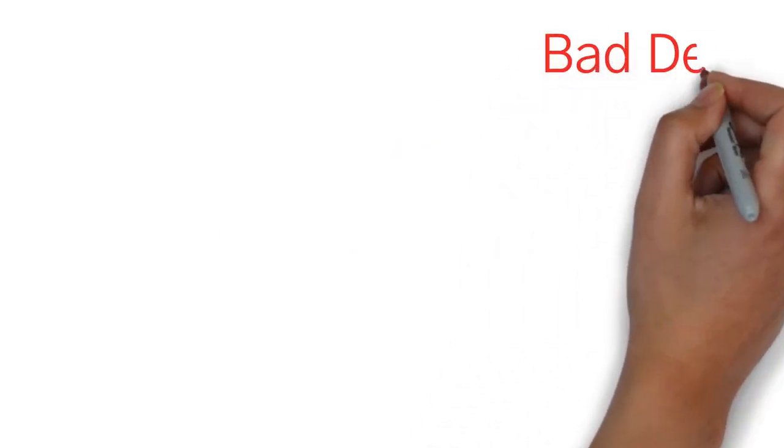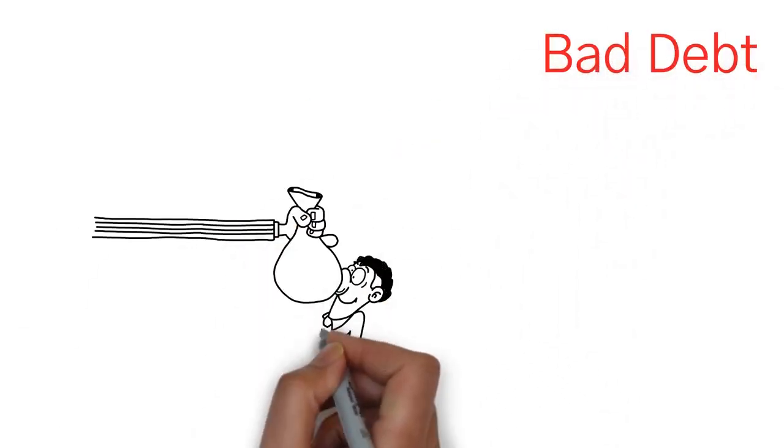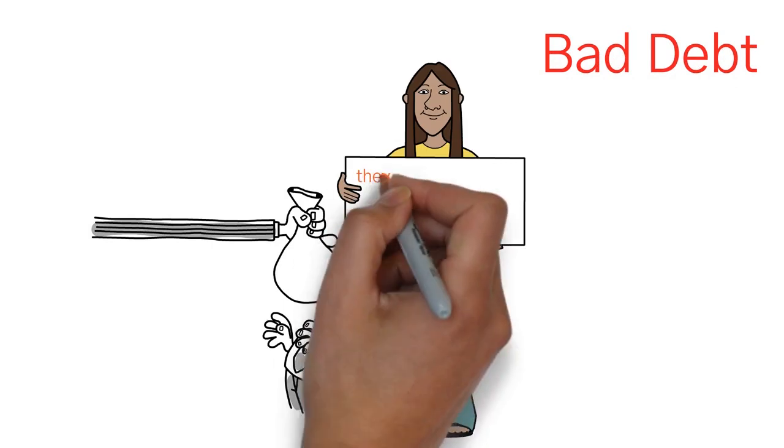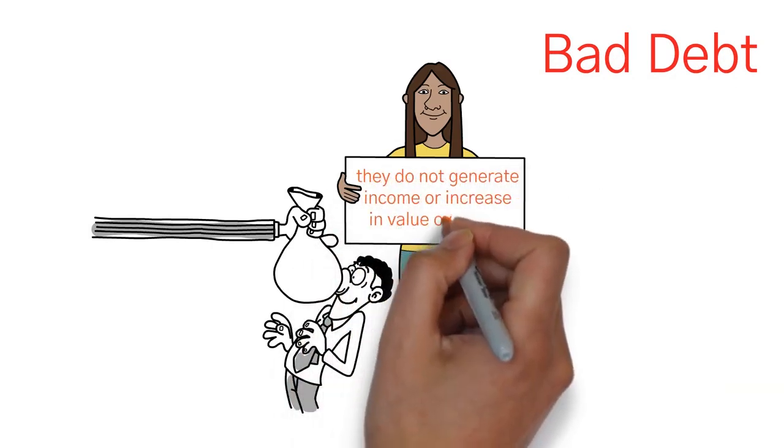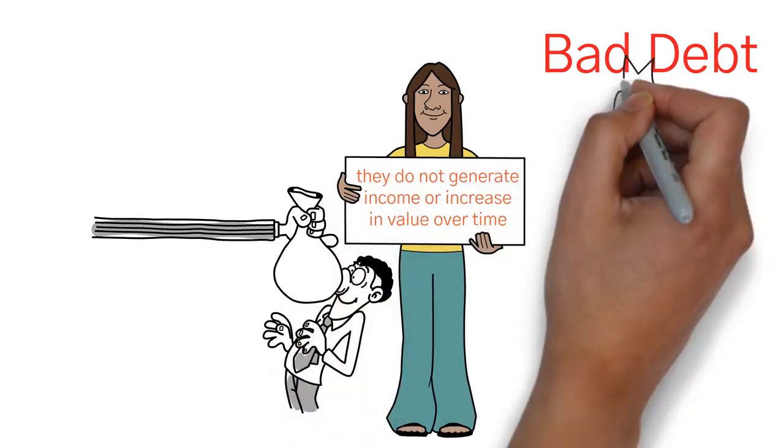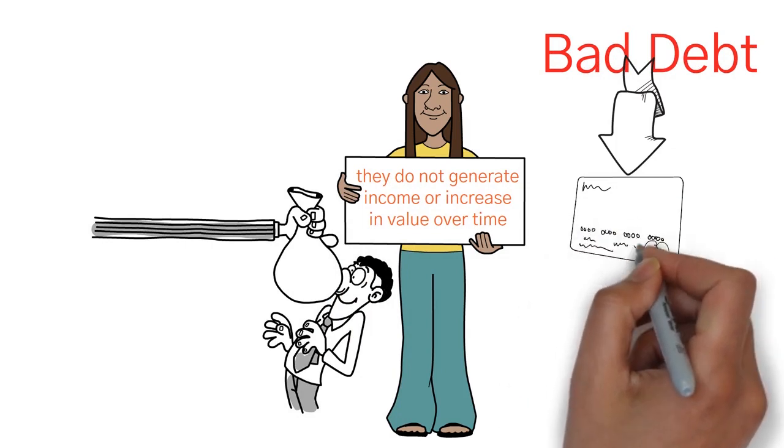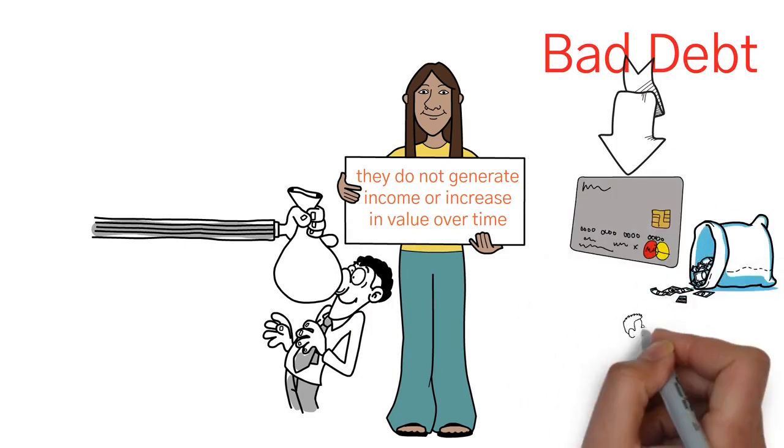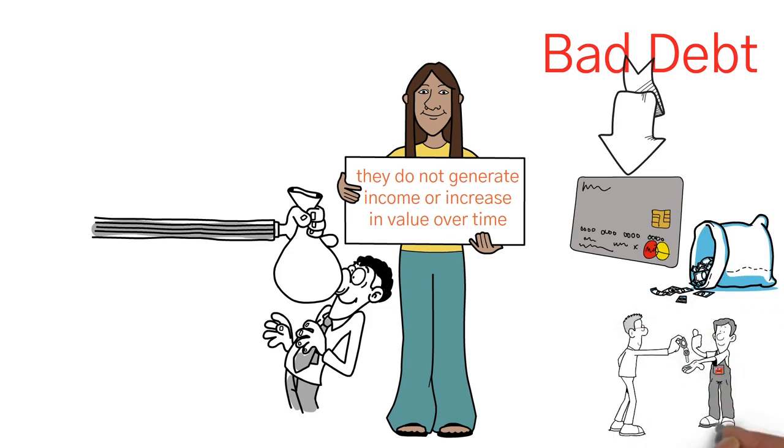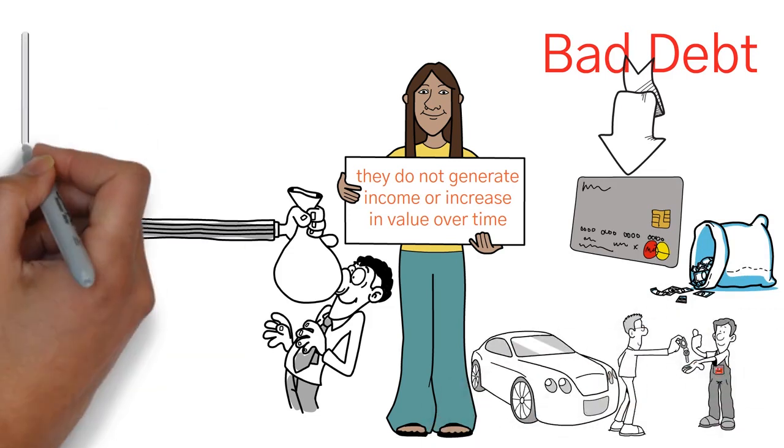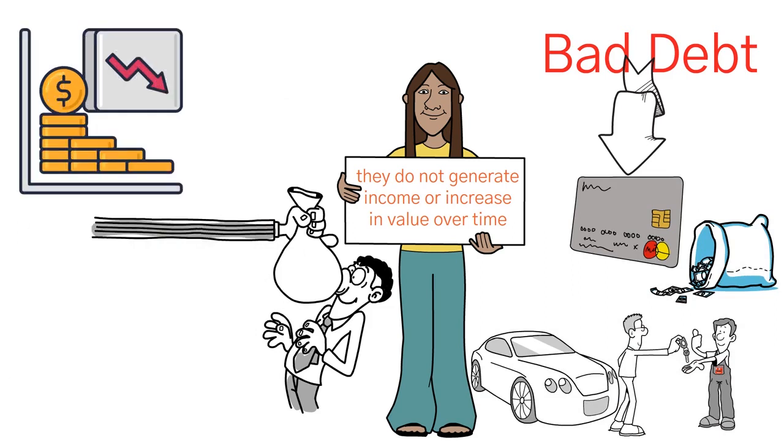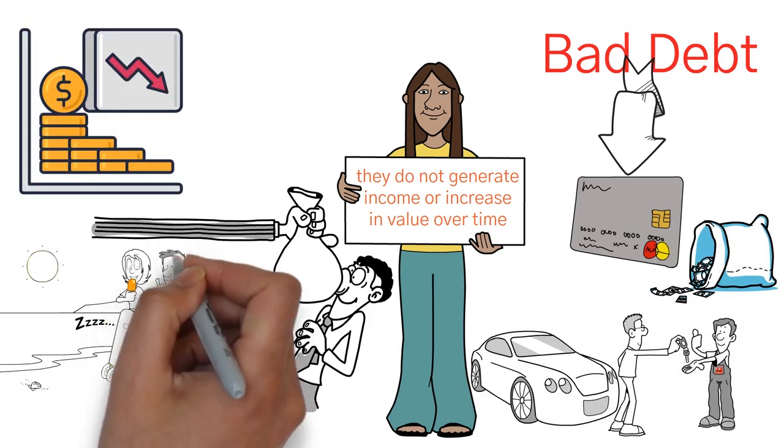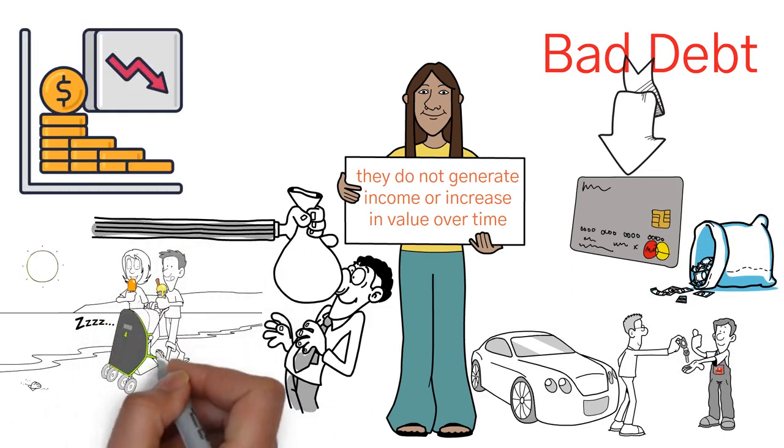Bad debts, on the other hand, are typically considered expenses as they do not generate income or increase in value over time. Examples of bad debts include credit card debt used to finance consumption, a car loan used to purchase a vehicle that is rapidly depreciating in value, or a personal loan used to finance a vacation or other leisure activity.